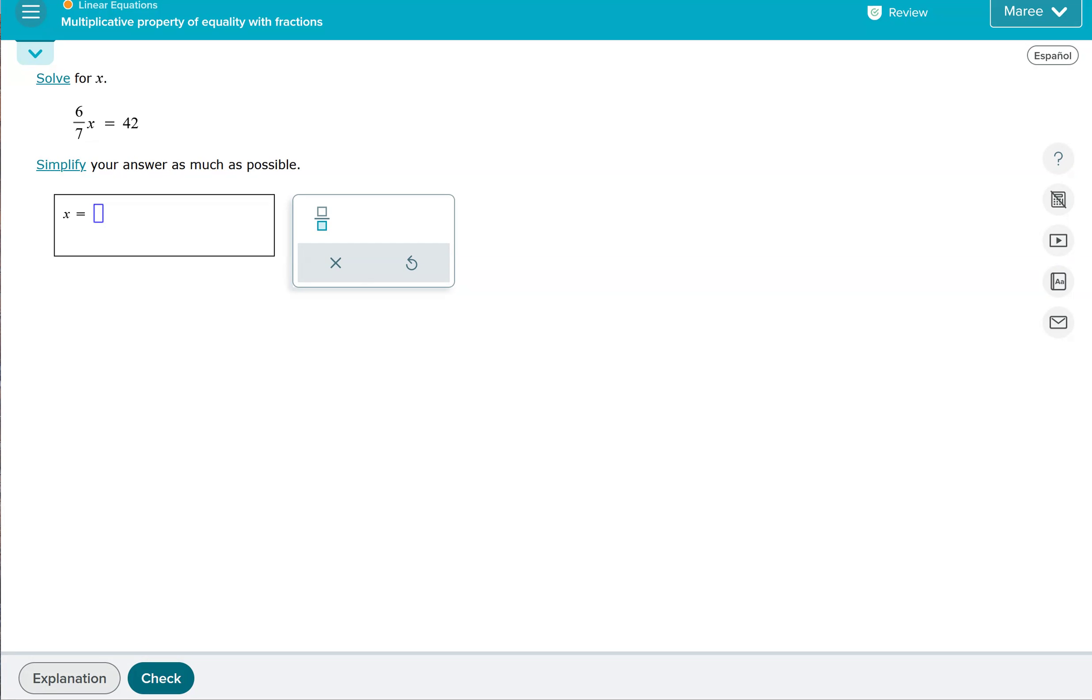So in this case, whenever you see property of equality, that just means there's going to be an equation involved. An equation is just a statement with an equal sign in it. And usually when we see those, we're solving for a variable. In this case, we're going to be having fractions involved in our equation somewhere.